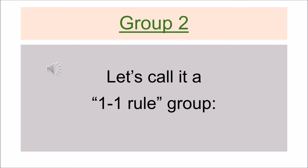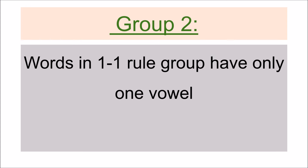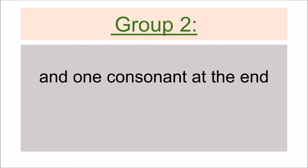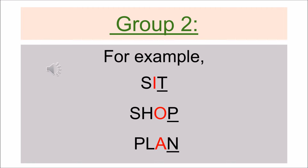Group 2 — let's call it the 1-1 rule group. Words in this group have only one vowel and one consonant at the end. For example: sit, shop, plan.